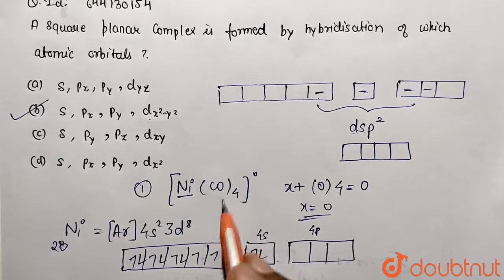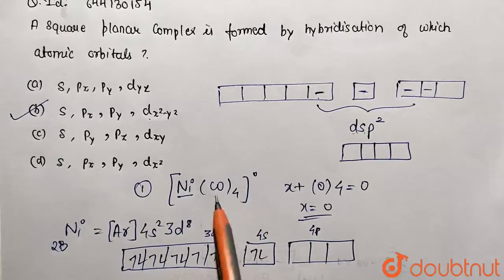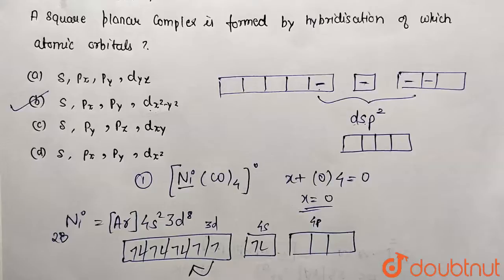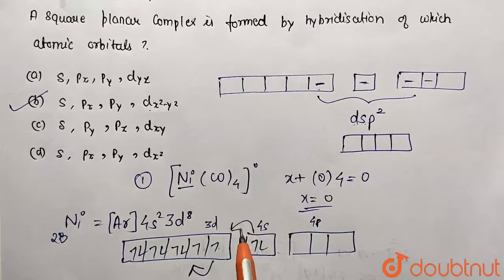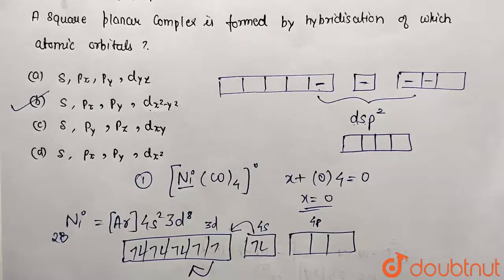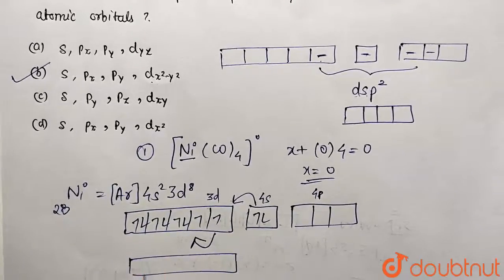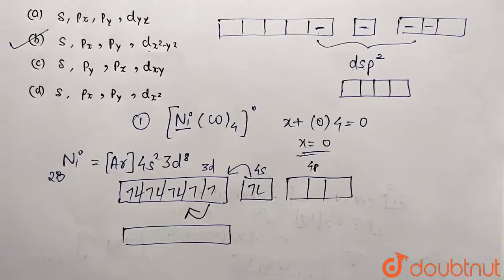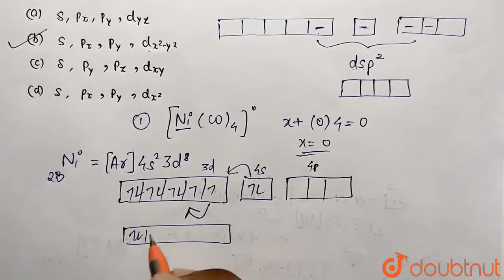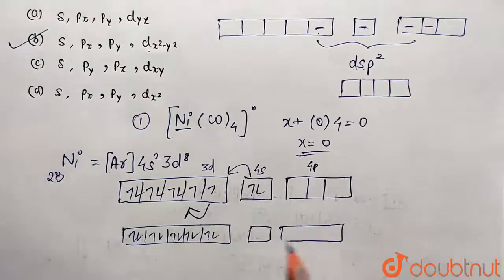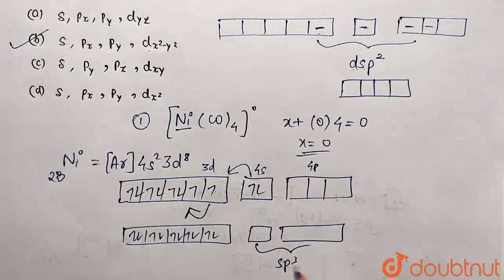Now if you see with respect to nature of the ligand present here, this is carbonyl which is a strong field ligand, so it will cause pairing of this electron. This orbital will be vacant, so there will be back shifting due to strong field ligand. After pairing, the hybridization is going to be sp³, which is correspondingly tetrahedral, which is not our answer.